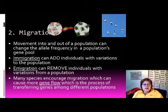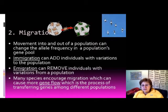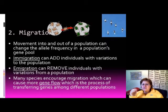The next mechanism is migration — the movement of individuals into or out of a population — which can change allele frequency in the gene pool. Immigration adds variation to the existing population, while emigration can remove individuals with certain variants from a population.